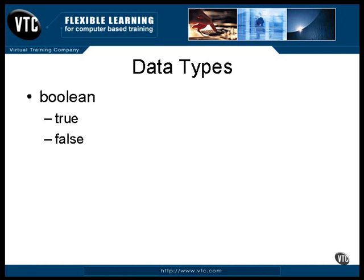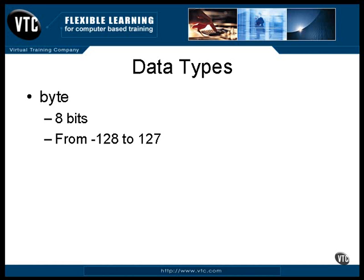There are a number of ways to write expressions that result in boolean values, and these expressions are used in if statements and while loops. A byte is an 8-bit integer value. It can hold the values from minus 128 to plus 127 — that's minus 2 to the 7th and 2 to the 7th minus 1. A byte is always a signed integer value; it can always contain both positive and negative numbers.